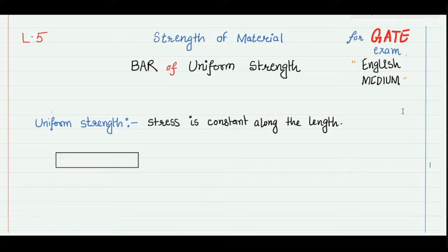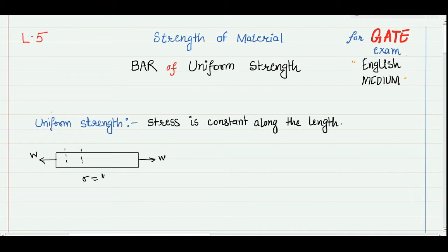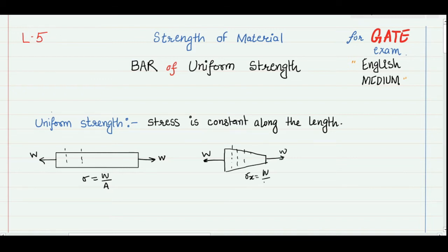Uniform strength means the stress is constant along the length of the structure. For example, consider a horizontal bar with load W applied at both ends. Since the cross-section area is constant, the stress at any cross-section is W/A — constant throughout. This is a uniform strength bar. On the other hand, for a tapered bar with the same load W, since the cross-section area is changing, stress is also a function of length — this is not a bar of uniform strength.